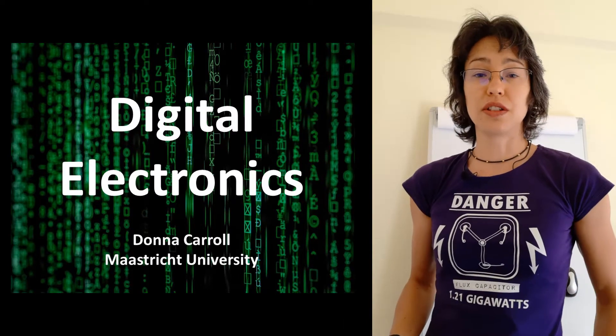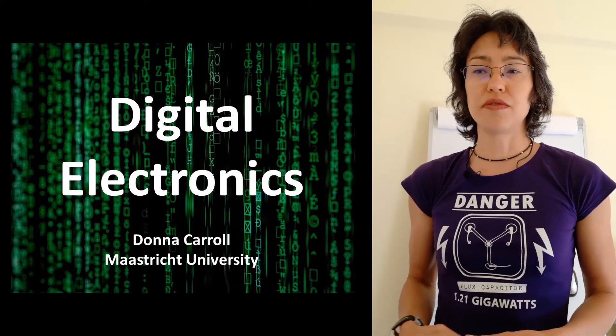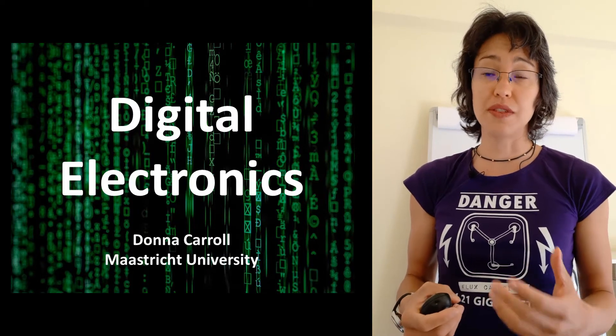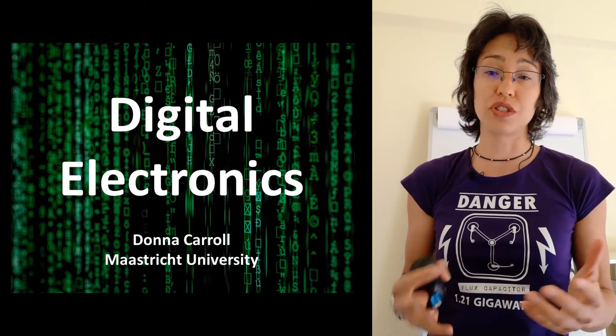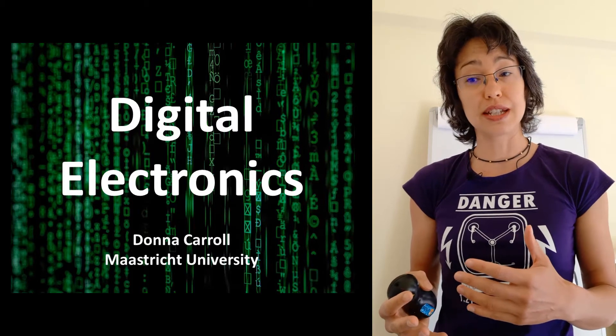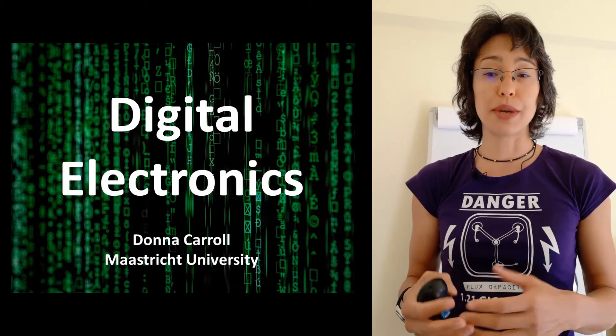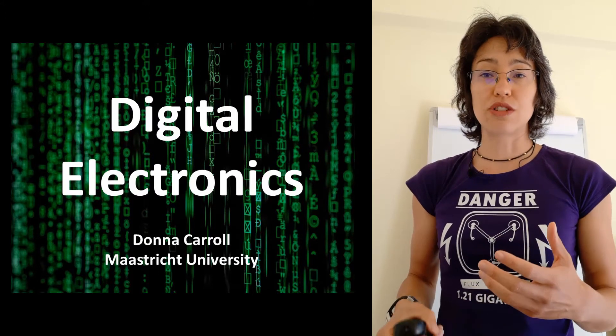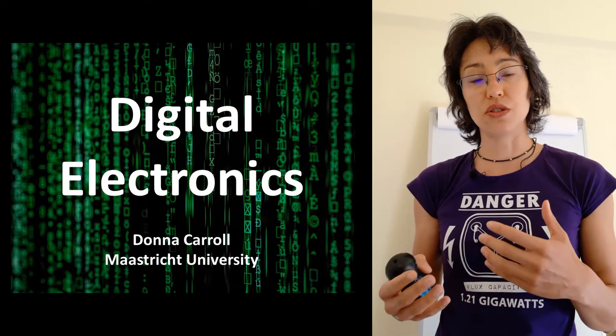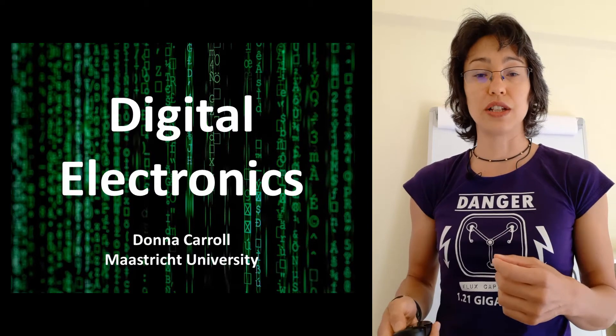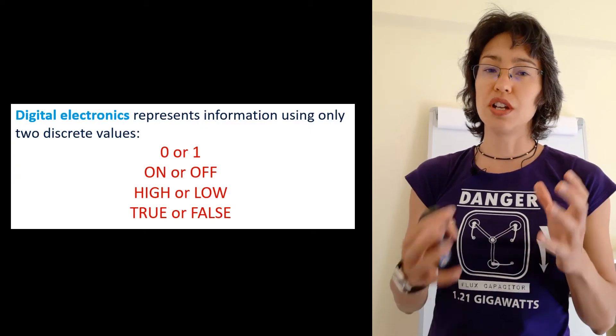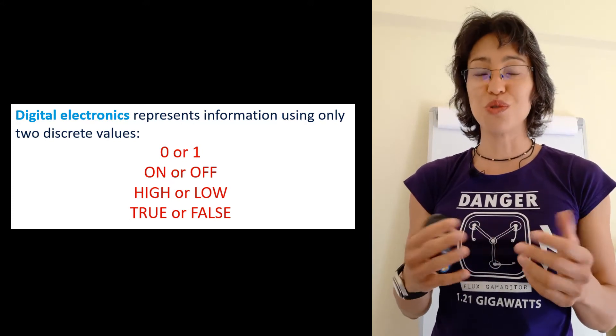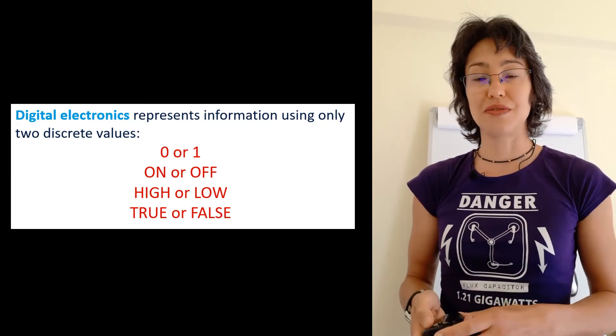Today I'm going to talk to you about digital electronics and this is very different from what we've covered so far. In fact, it's quite a mathematical topic, and if you enjoy maths and solving puzzles and algebra, you'll really enjoy this. If you're interested in computer sciences and programming, this topic is also very relevant. In digital electronics, information is represented using just two discrete values, and we usually call those a zero and a one, or an on or an off, or high and low, or true and false.